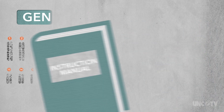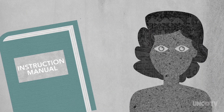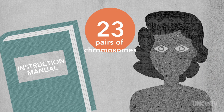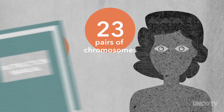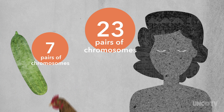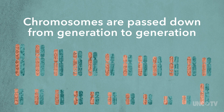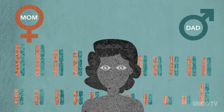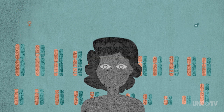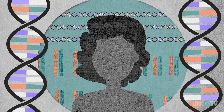Some books have more chapters than others. You, for example, have 23 complete chapters, while a cucumber has 7 and a chicken has 39. And chapters are passed down from generation to generation — you received half of each chapter from your mom and half from your dad. So to keep with the analogy, your DNA, genes, and chromosomes are a big part of the story of you.